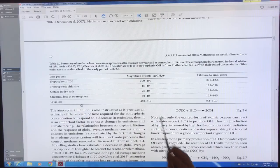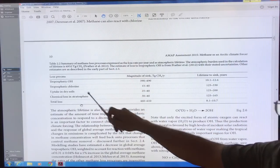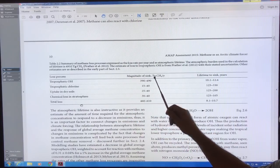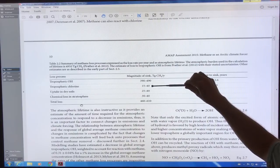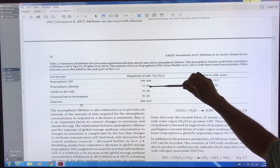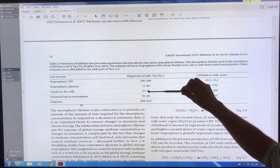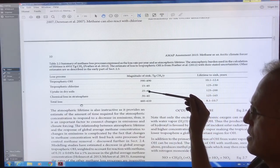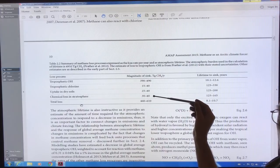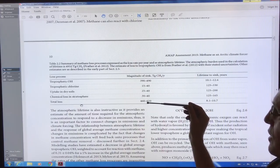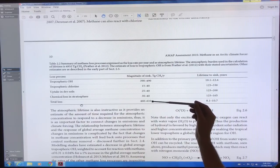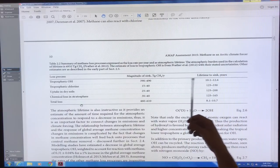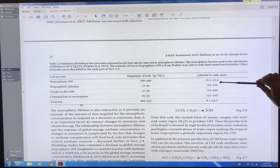You can also get that from all of the individual processes. So here we have tropospheric OH. This is a loss process of the methane in the atmosphere, the magnitude of the sink 390 to 490 teragrams per year, the largest. There's the tropospheric chlorine, mostly near the surface of the ocean. There's the uptake in dry soils, which the bacteria then break down the methane. And because it's dry, there's oxygen available that decomposes the methane. And this is the chemical loss in the stratosphere. You add all these together and you get this particular range here as the sink. And then you can get lifetimes for each of these sinks. So how long does this process take for each of these sinks? And you get these different lifetimes here.